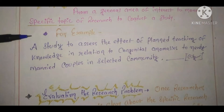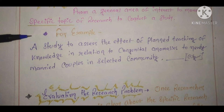For example: a study to assess the effect of planned teaching of knowledge in relation to congenital anomalies to newly married couples in a selected community of your chosen city. We already selected that we want to do research on congenital anomalies for newly married couples. Since congenital anomalies is a huge topic itself, here we stick to a specific problem — assessing knowledge before and after giving education about congenital anomalies to newly married couples in selected communities of your chosen city. So here you will be more specific.